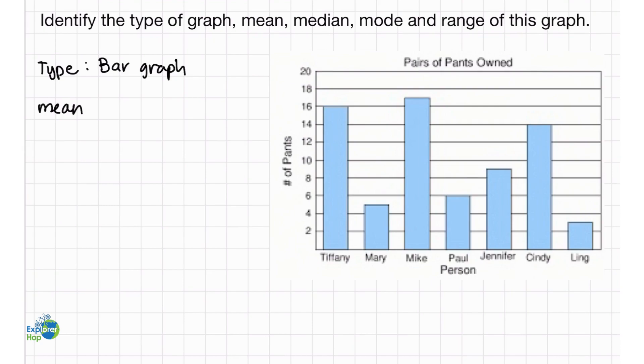Now for the mean. If we recall, the mean is the average of all the data. So, let's write out the data and then calculate the average. We have 16, 5, 17, 6, that should be 9, 14, and 3.